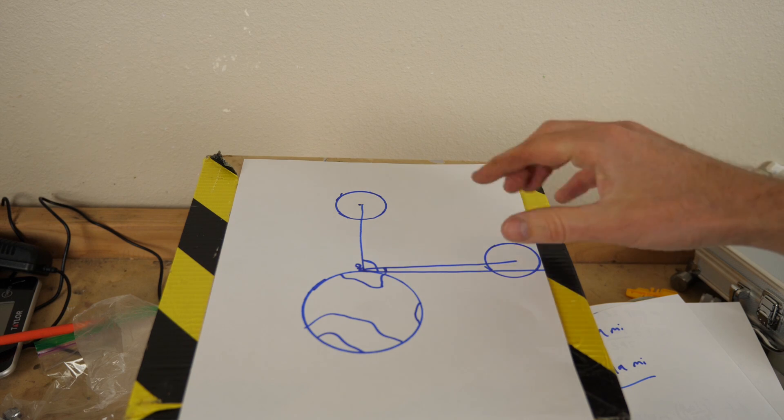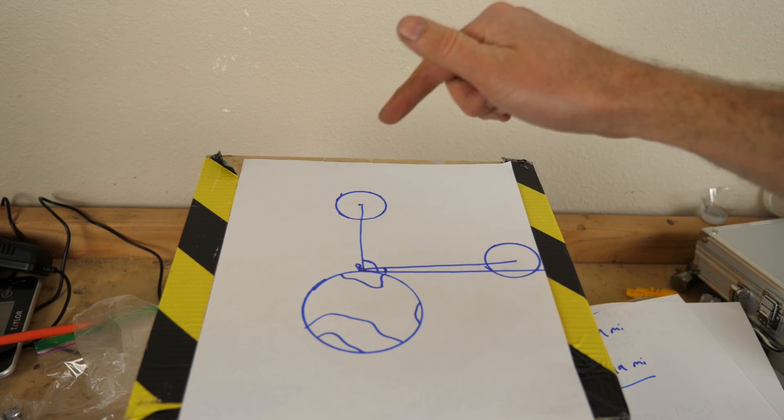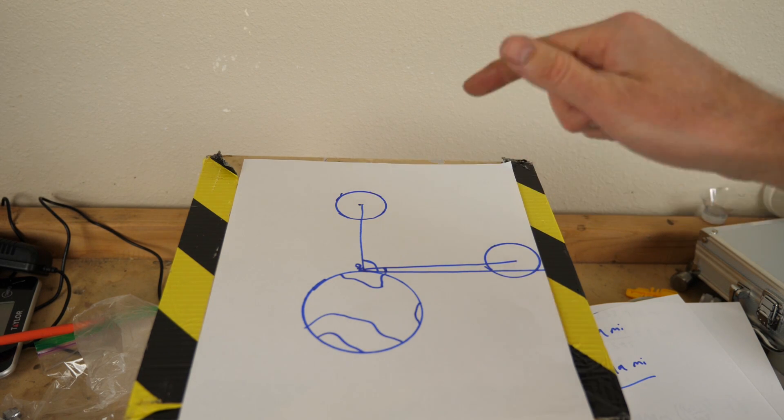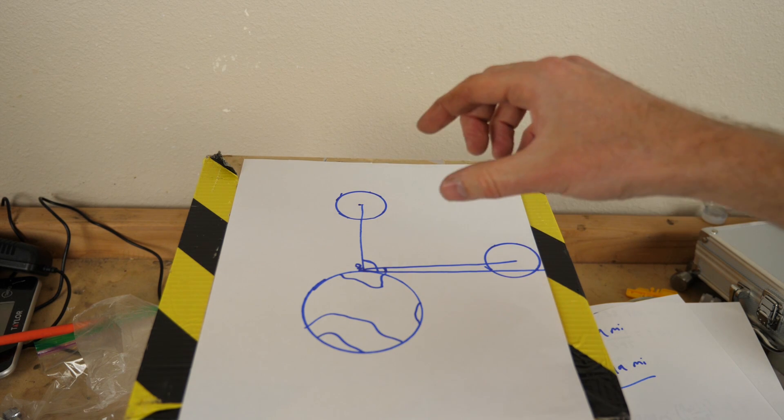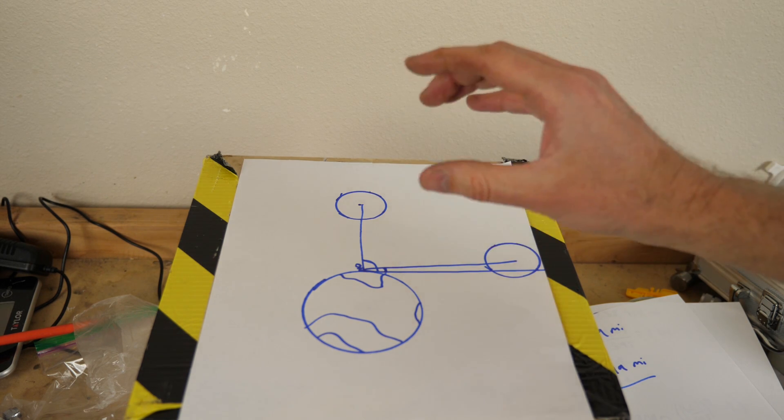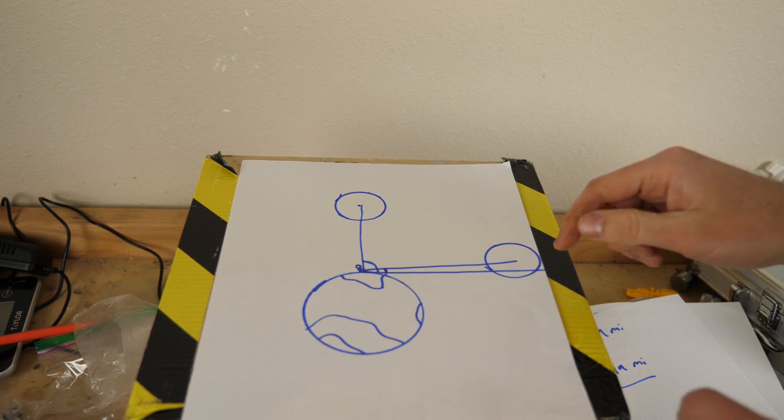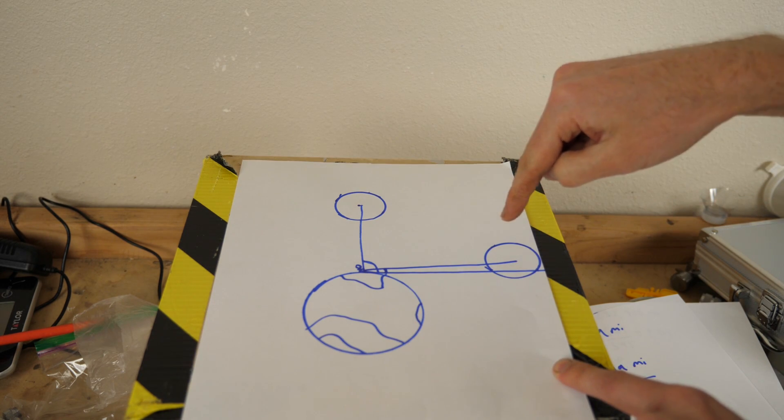And if you don't like your brain tricking you like that you can actually show it who's boss by just turning upside down. For some reason when you turn upside down and look at the moon on the horizon it doesn't look as big anymore. That's one proof that it's an optical illusion.